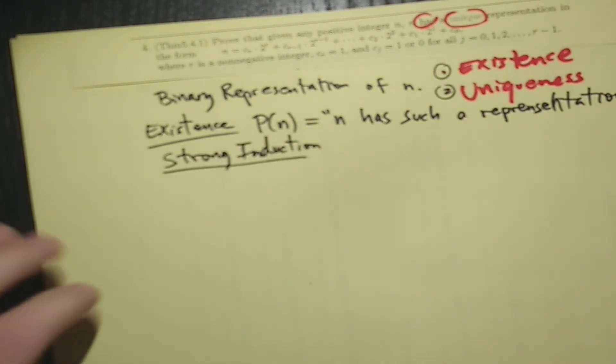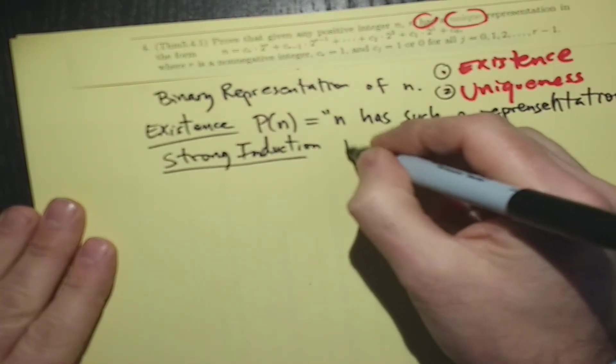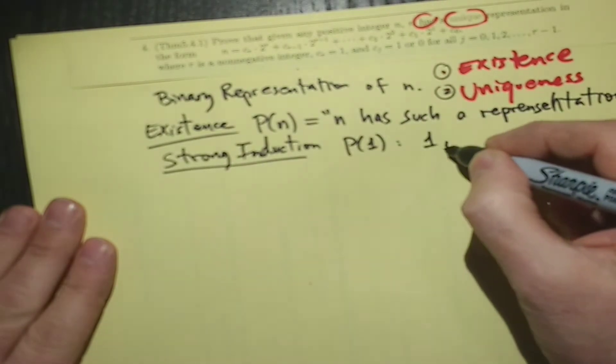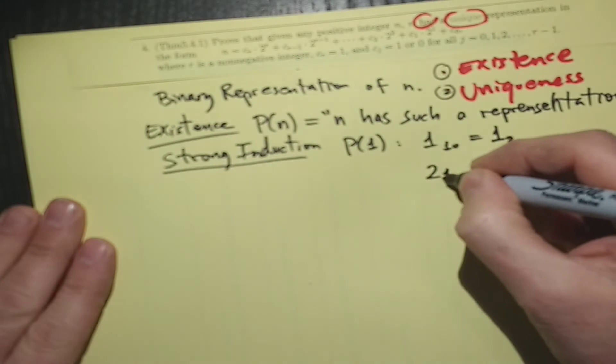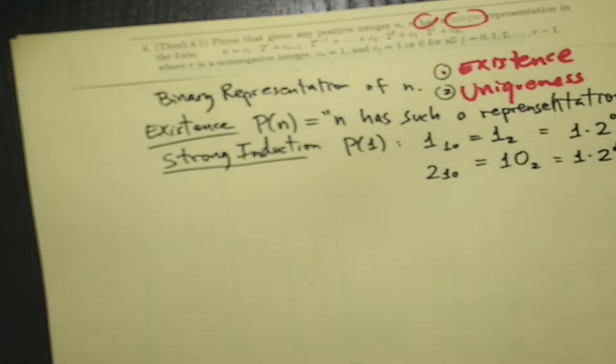And let's forget about the base case. And if you want a base case, you could say that P(1): 1 in base 2 is 1. 1 base 10 is 1 base 2. If we want another base case, 2 base 10 is 1, 0 base 2. So this is 1 times 2 to the 0. Over here, this is 1 times 2 to the 1 plus 0 times 2 to the 0. And so on. So you could just start writing out the binary representation for any of these numbers.